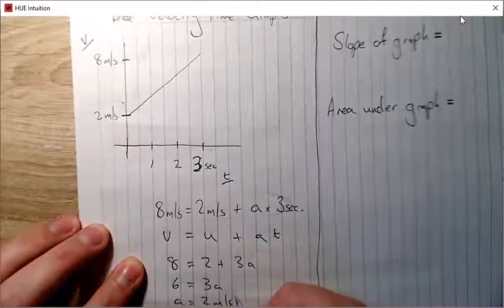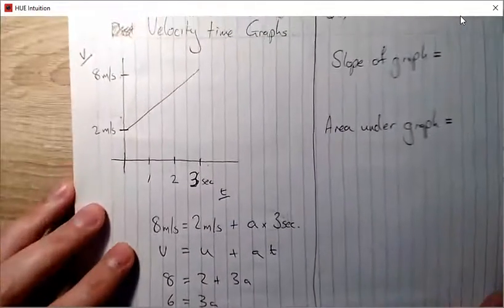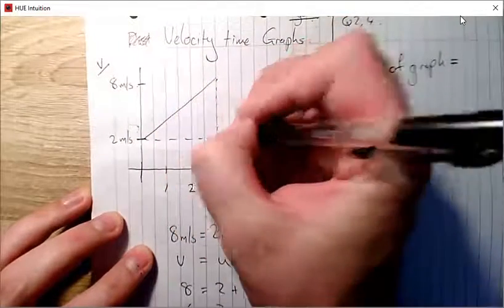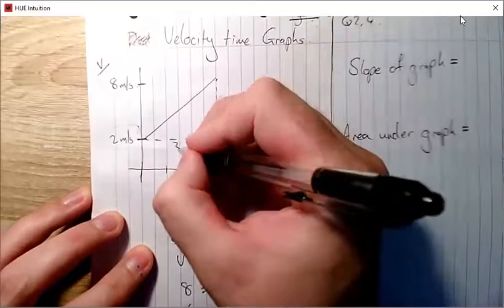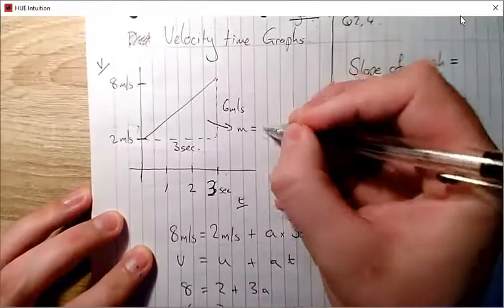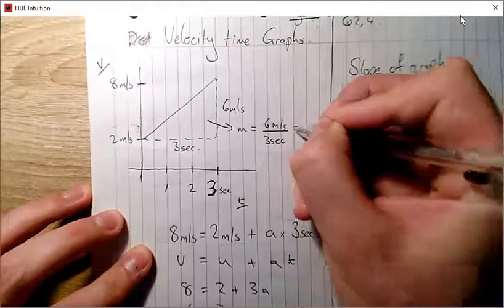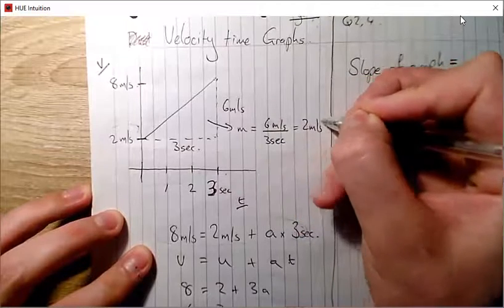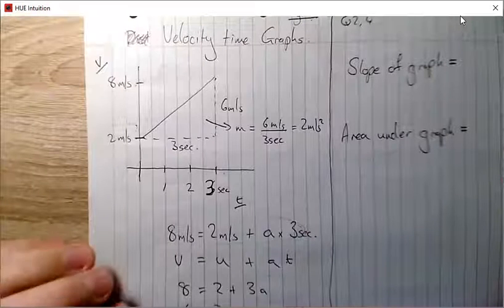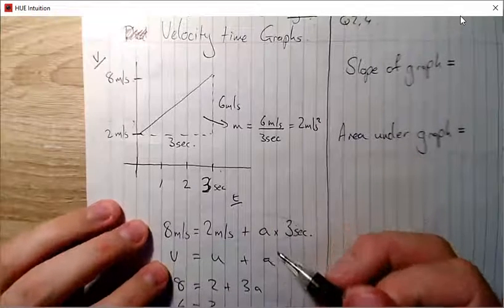That's using a bit of algebra. However, if you look at your graph, the slope is a rise of six meters per second and a run of three seconds, so rise over run gives six over three, which is two meters per second squared as well. One of the nice things about a velocity-time graph is you can find acceleration from the slope — you can just pick it off the graph quite quickly.